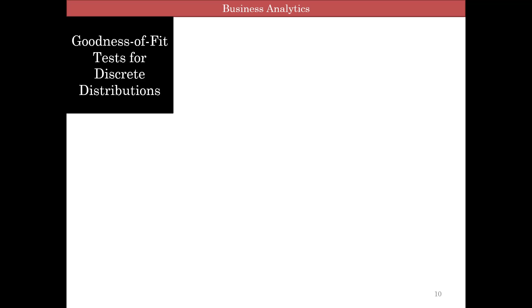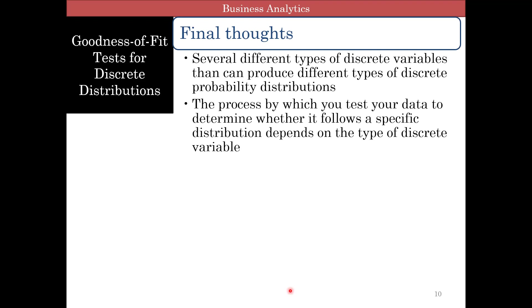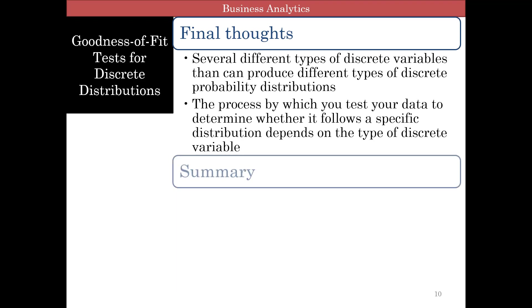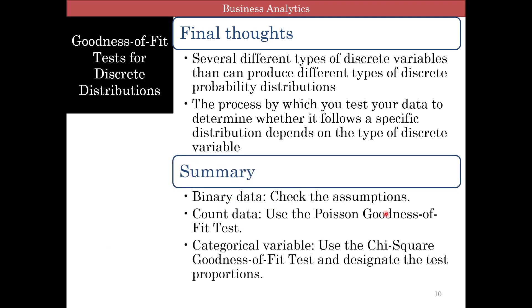This brings us to our final thoughts on descriptive analytics, and after this lecture you're going to move on to predictive analytics. Final thoughts on chi-square: there are several types of discrete variables and they can produce different types of discrete probability distributions. The process by which you test your data depends upon the type of discrete variable. For binary data, check your assumptions and use Excel directly. If it's count data, use the Poisson goodness of fit test. For other categorical variables, use the chi-square goodness of fit test with designated test proportions. With this, we finish the entire module on descriptive analytics and move on to predictive analytics.